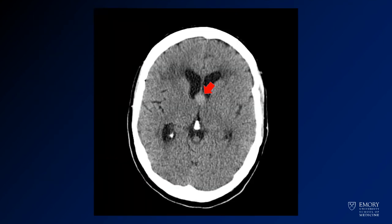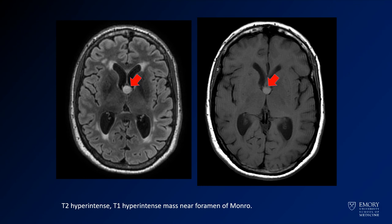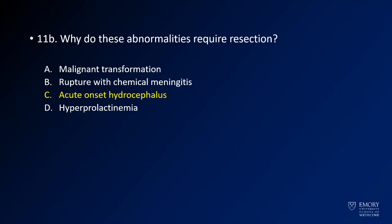Here you see the CT from the beginning, with an arrow denoting a hyperdense mass in the anterior third ventricle. Here you see the same findings on MR — a T2 and T1 hyperintense mass in the anterior third ventricle. You can see from this position why patients might be prone to developing hydrocephalus. These abnormalities have to be resected because of the risk of acute onset hydrocephalus.